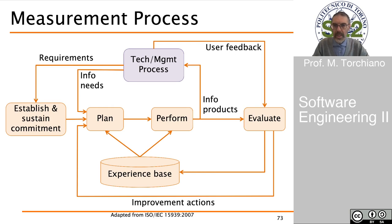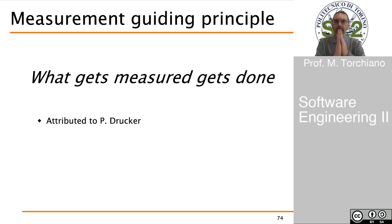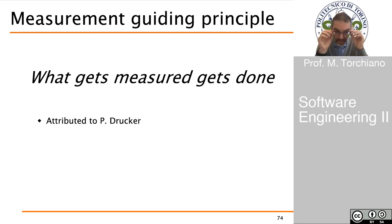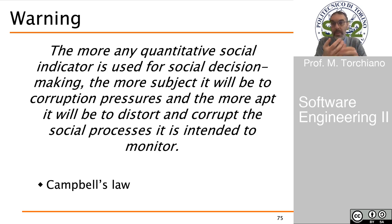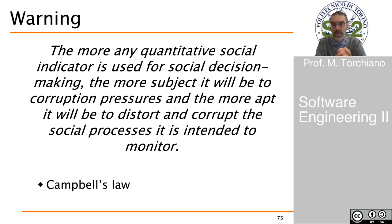Concluding this general overview, it is important to remember that the motivation to perform measurement is that 'what gets measured gets done' — if you are not measuring anything, you cannot improve on it. However, there are warnings. One is Campbell's Law: the more any quantitative social indicator is used for social decision-making, the more subject it will be to corruption and pressure, and the more apt it will be to distort and corrupt the social process it is intended to monitor.